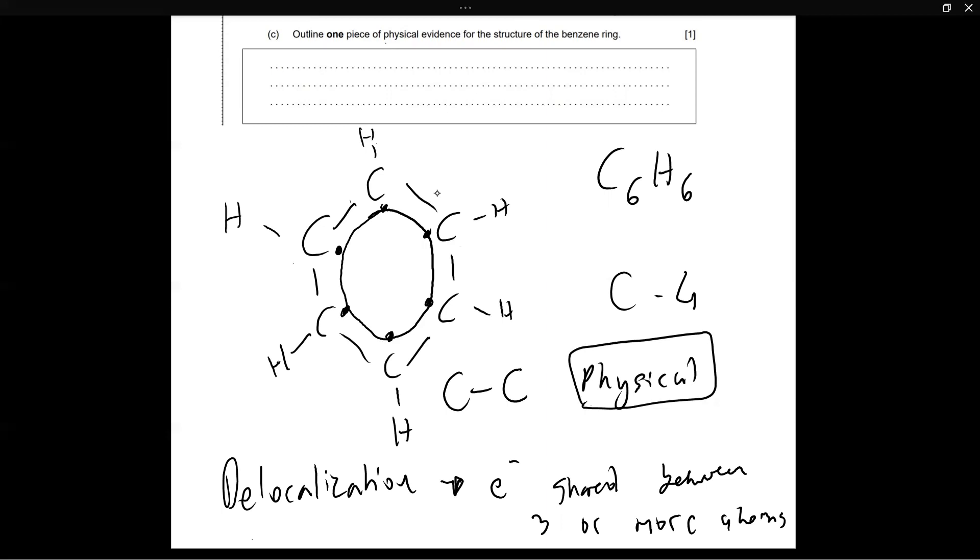And that really goes against what Kekule's structure showed us, because Kekule's structure had alternating double bonds. It had three double bonds. So if there are three double bonds, we should expect that three of the six bonds that we measure in the benzene ring should be shorter than the others. Because remember, double bonds are short, single bonds are long. But we didn't see anything like that. All the carbon to carbon bonds were equal. And in addition to that, the length of the carbon to carbon bond in the benzene ring wasn't the length of a single bond either. And neither was it the length of a double bond. It was actually in between these two. So it wasn't as long as a single bond, but yet it wasn't as short as a double bond.